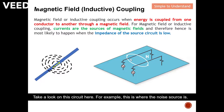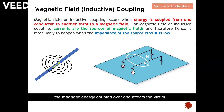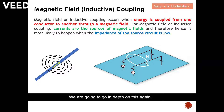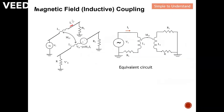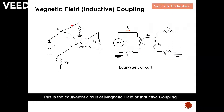Take a look at this circuit here. For example, this is where the noise source is. The victim is just nearby, and the magnetic energy couples over and affects the victim. So this is a brief idea of how magnetic field coupling actually occurs. We're going to go in depth on this again.